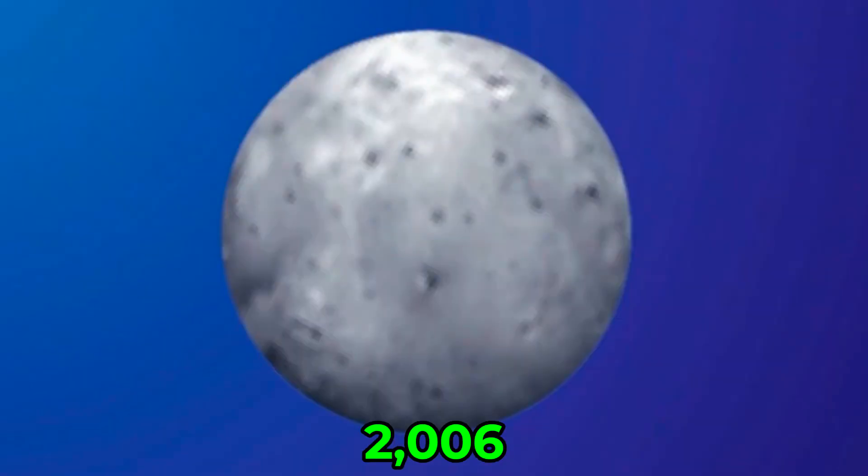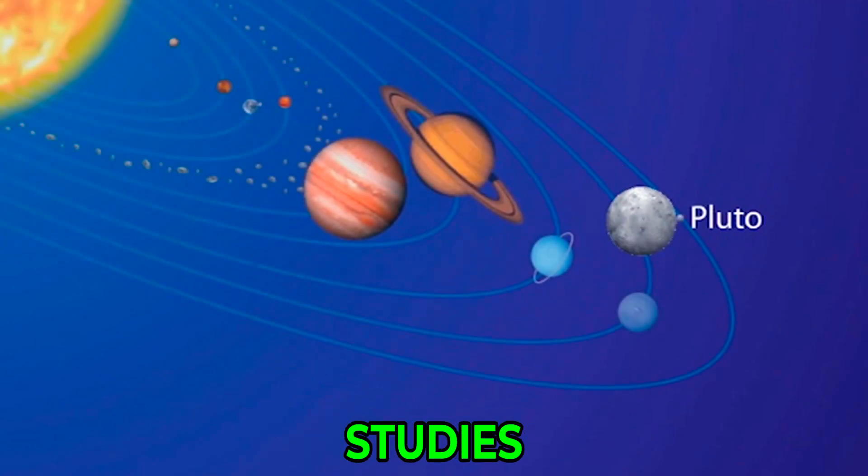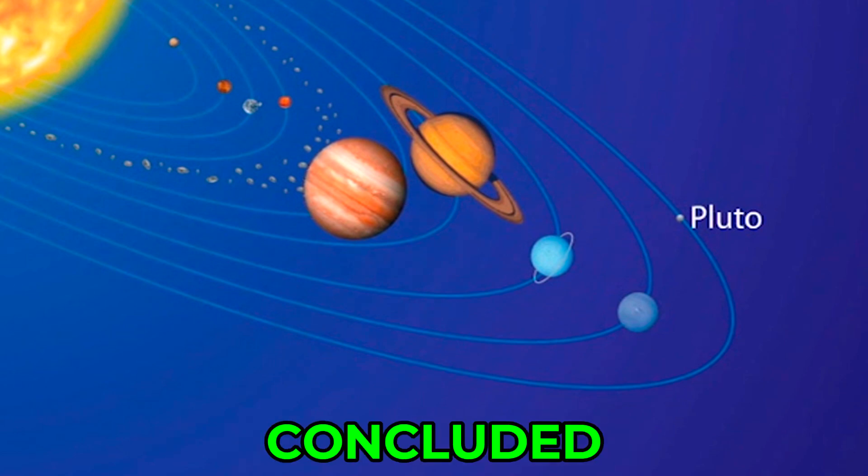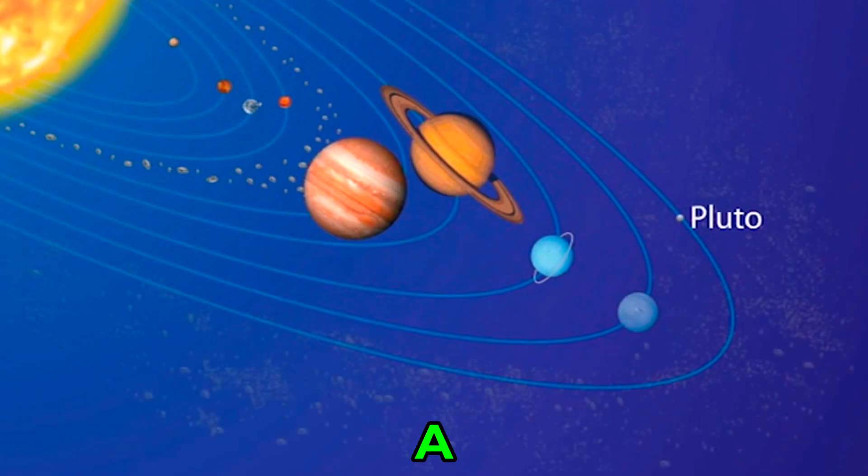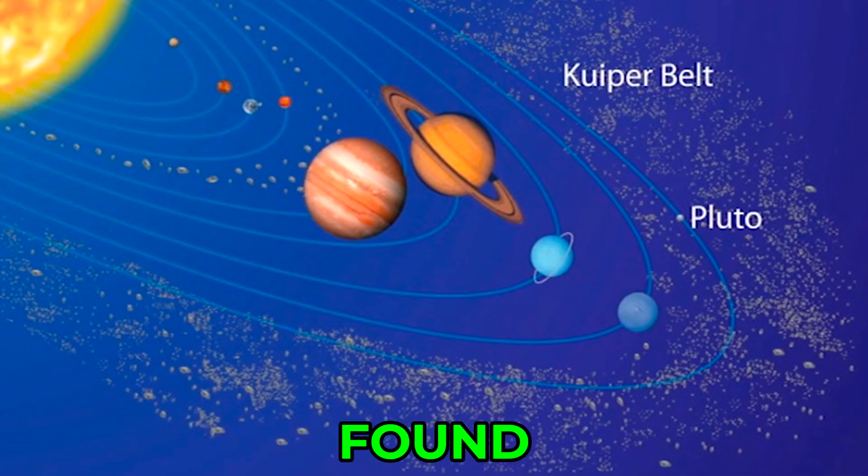Up until 2006, Pluto was considered the ninth planet from the Sun. After intensive studies, a group of international astronomers concluded that Pluto was actually a dwarf planet in a region called the Kuiper Belt. Asteroids and other planetesimals are found in this far distant region of our solar system.